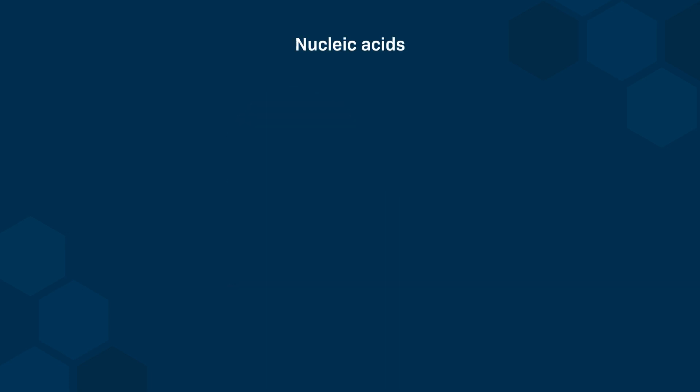Nucleic acids are linear macromolecules that are formed by the polymerization of building blocks that we call nucleotides. They're grouped into two types: deoxyribonucleic acids, known as DNA, and ribonucleic acids, known as RNA.